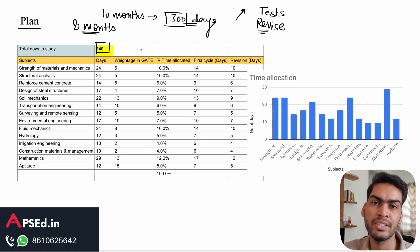About 240 days, that's what you have. Assuming that you have not prepared for GATE in the past, for a subject like strength of materials 24 days, structural analysis 24 days. Based on the weightage and my understanding of how much time it takes for an average student to finish the subject, I have taken these. It can take more or less based on how you are in that subject right now.